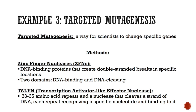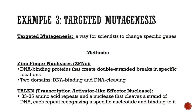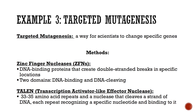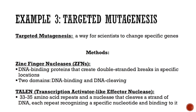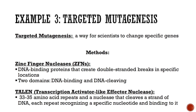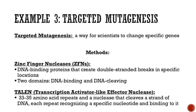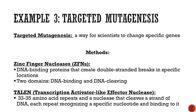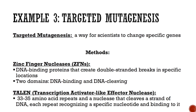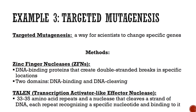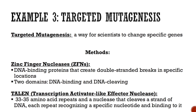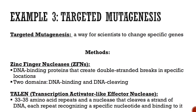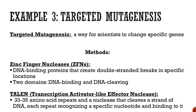Example 3 is targeted mutagenesis — a way for scientists to change specific genes. There are two different methods. The first is zinc finger nucleases, or ZFNs. Zinc finger nucleases are DNA binding proteins that create double-stranded breaks in specific locations. There are two domains: DNA binding and DNA cleaving.